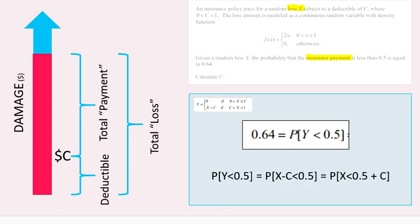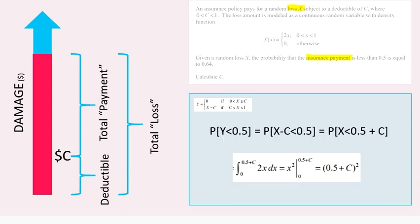I've done that here. In my equation, the probability of Y being less than 0.5 is equal to the probability that X minus C is less than 0.5, which equals the probability that X is less than 0.5 plus C. Continuing on, you can do the integration — that's not the main point of this question — but you integrate the distribution of X from 0 to 0.5 plus C.